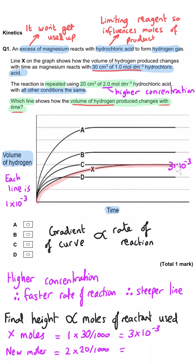For our new condition, when the moles increases to 4×10⁻³, this is going to be an extra third as much hydrochloric acid used, and therefore we're going to make that extra hydrogen gas as well — so this time we're going to be four lines up, and B must be the correct answer. A is far too high; C is the same amount of hydrogen; and D is actually making less hydrogen. B is correct because it shows 33% extra hydrogen, corresponding to that extra hydrochloric acid.